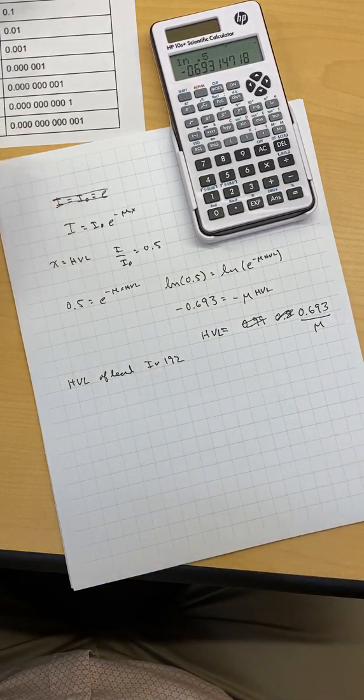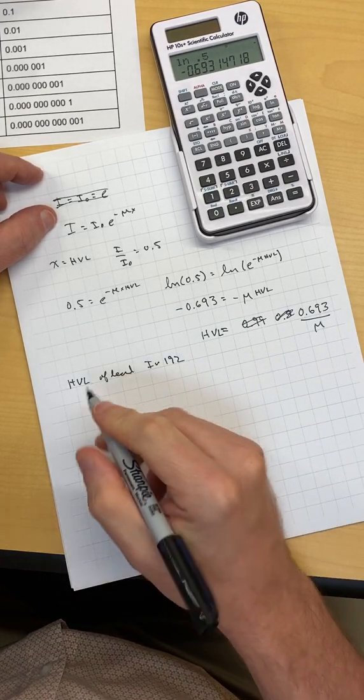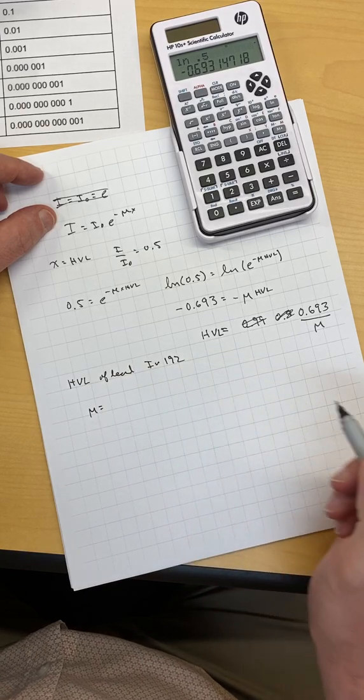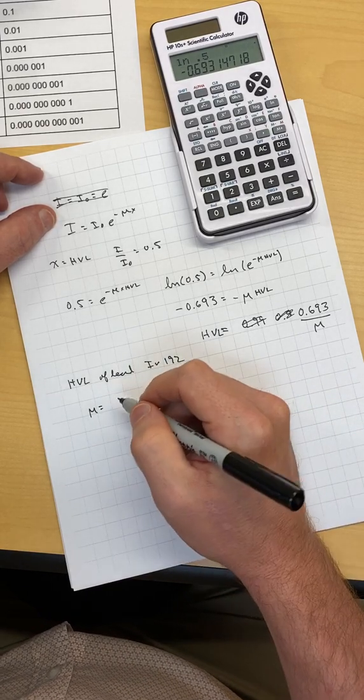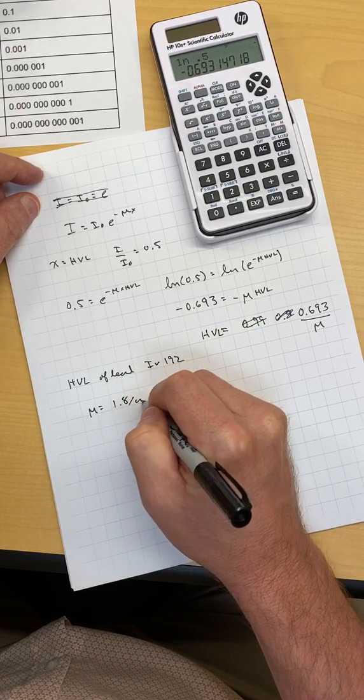And for this example, I picked one x-ray energy of iridium-192, and I found out that mu, I looked it up on the internet, and I found out that mu is equal to 1.8 per centimeters.